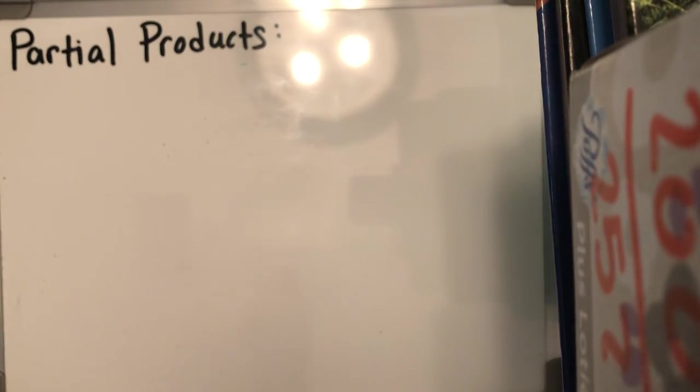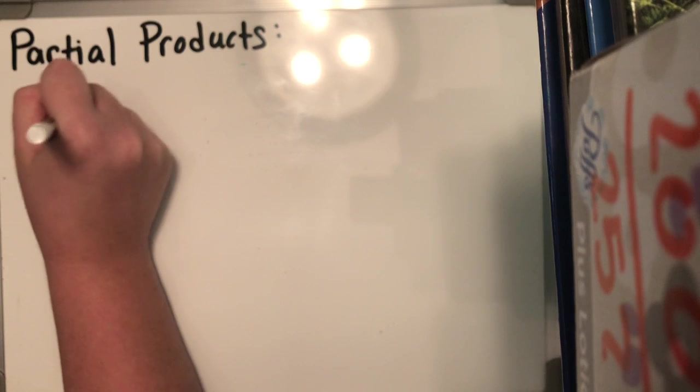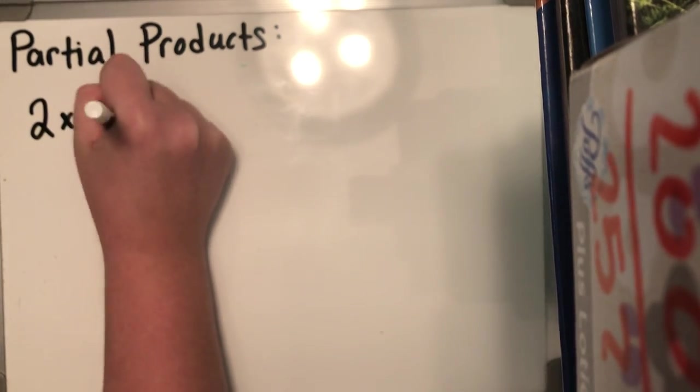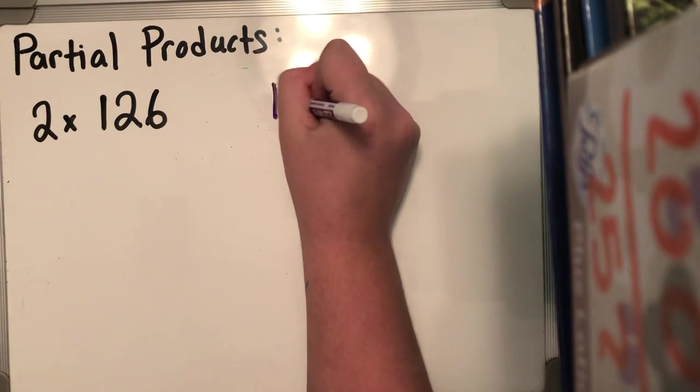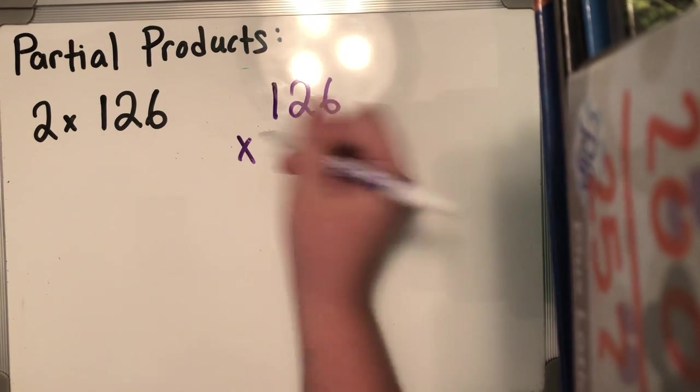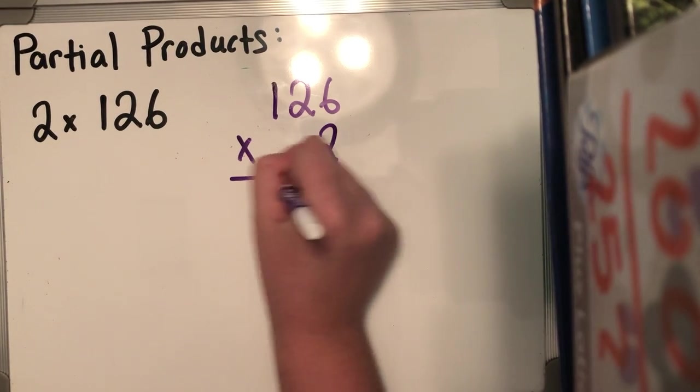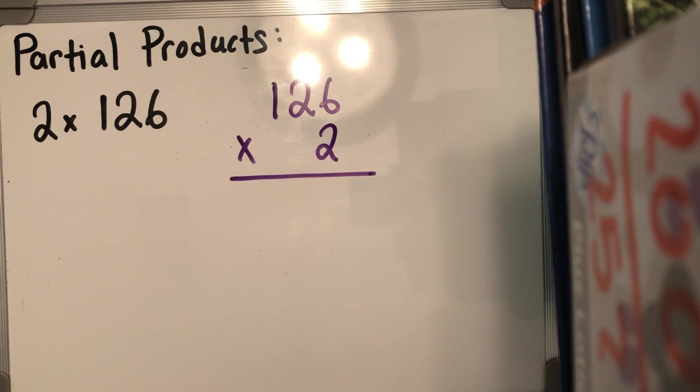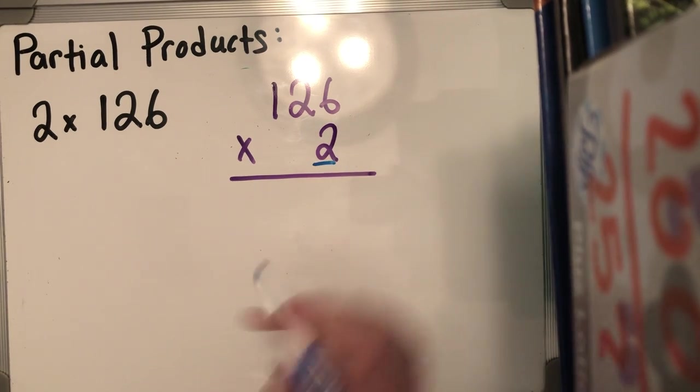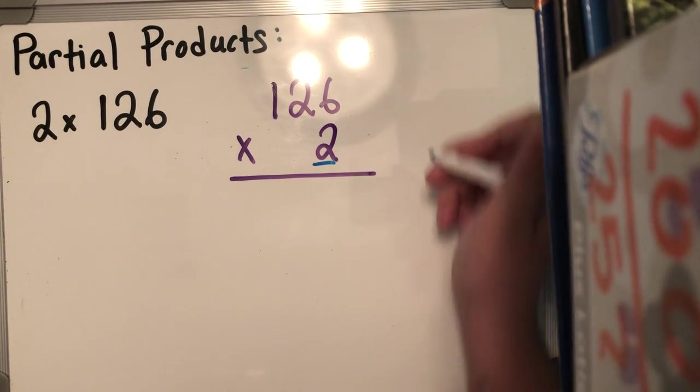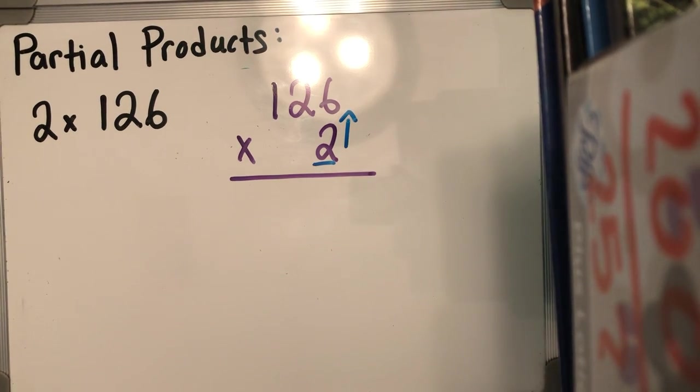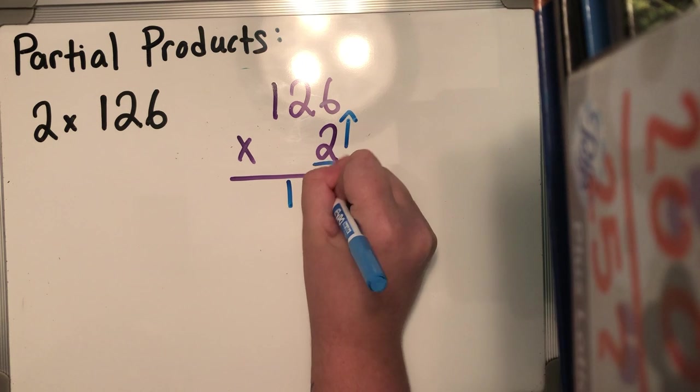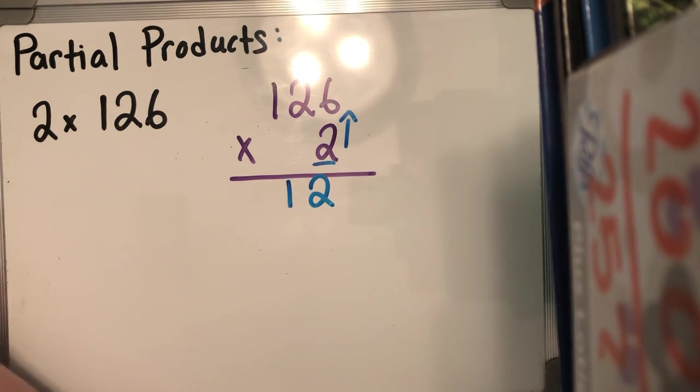Go ahead and write this problem down with me. Let's see, two times 126. I'm gonna change it and write it vertically so that way I can solve my math. It's a little bit easier for me to do so. I know I'm gonna keep that two in place and I'm gonna go and multiply up the ones. So two times six is 12, and I write that whole number down.